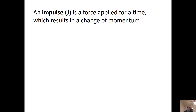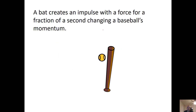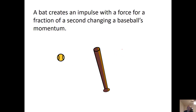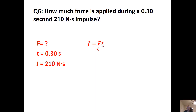Impulse is a force applied for a time, and it results in a change in momentum. If you hit a baseball with a force for a fraction of a second, you change its momentum. The impulse equation is J = F × t. The unit is newton times seconds (N·s). For example: how much force is applied during a 0.3-second, 210 N·s impulse? Rearrange to F = J / t, and you get 700 newtons.